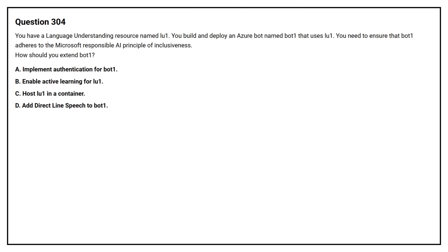Question number 304. You have a language understanding resource named LU1. You build and deploy an Azure bot named Bot1 that uses LU1. You need to ensure that Bot1 adheres to the Microsoft Responsible AI principle of inclusiveness. How should you extend Bot1?